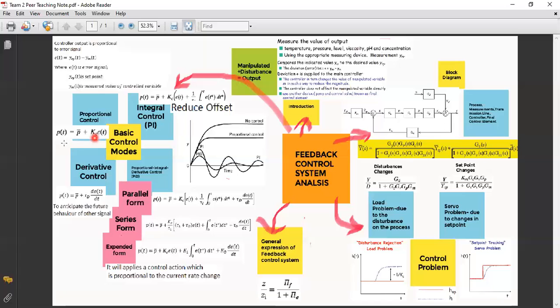Okay, for the second type is integral control, which is the controller output depends on the integral of the error signal over time. Okay, the equation is given like that. So integral control action provides an important practical advantage to eliminate the offset. And the disadvantages of integral control is it tends to produce oscillatory response of the control variable.